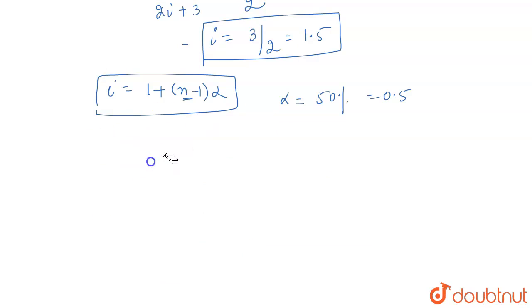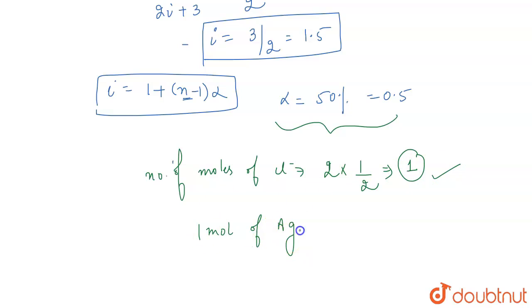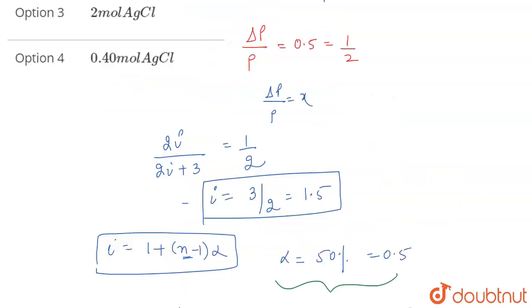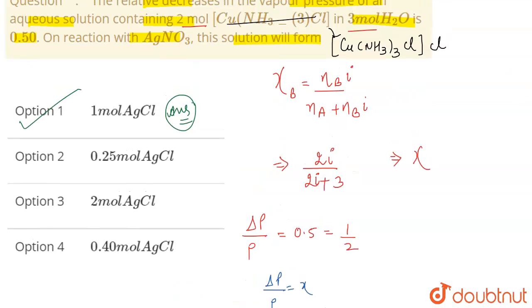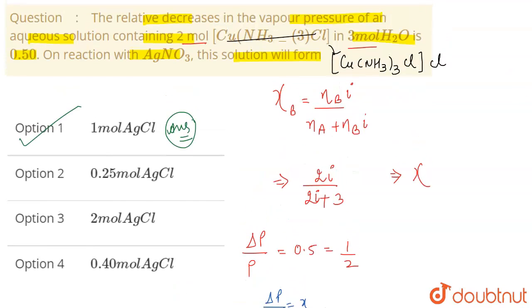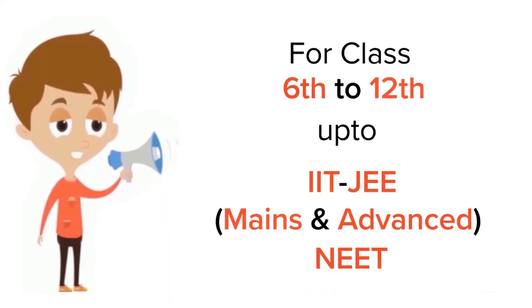On 50% dissociation, the number of moles of Cl⁻ ions released will be half. Initially there were 2 moles, so only 1 mole of Cl⁻ will be released. This means only 1 mole of AgCl will be precipitated when reacted with AgNO₃. This corresponds to option number one. The correct answer is option 1.